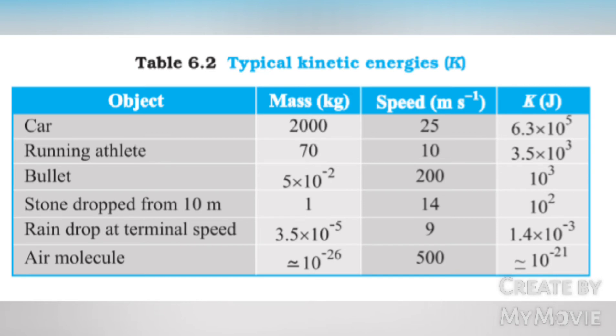Rain drop at terminal speed: 3.5 × 10^-5 kg, 9 m/s, 1.4 × 10^-3 joules. Air molecule: approximately 10^-26 kg, speed 500 m/s, kinetic energy approximately 10^-21 joules.